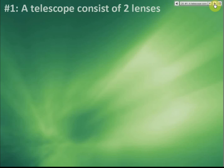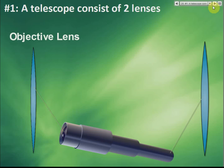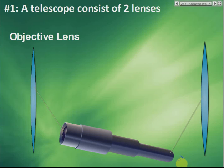An astronomical telescope consists of two lenses. There's one lens closer to the object, called the objective lens, and another lens closer to the eye, called the eyepiece.